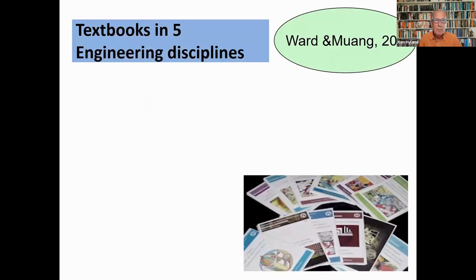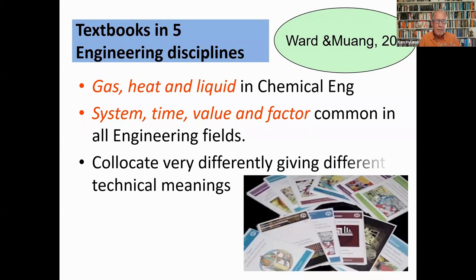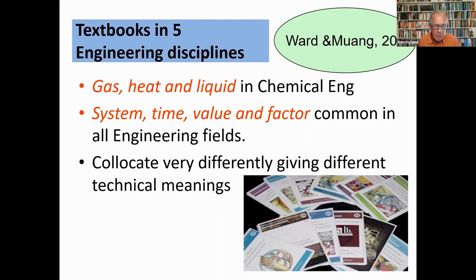Vocabulary can also differ across disciplines within the same field. Ward and Muang's study compared items in textbooks from five engineering fields and found that 'gas', 'heat' and 'liquid' occurred almost exclusively in chemical engineering. While items like 'system', 'time', 'value' and 'factor' were high-frequency across all engineering fields, they collocated very differently — combining with other words to give highly specific technical meanings like 'settling time', 'critical value', and 'load factor', which were specific to particular fields.